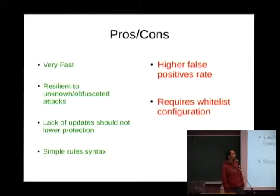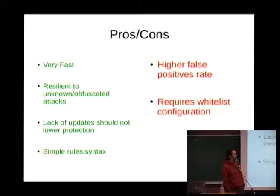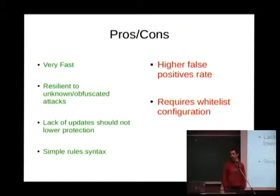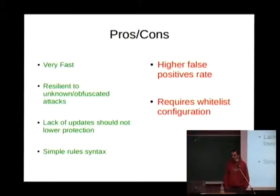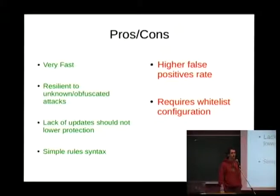Avoiding large sets of regular expressions and signatures makes the software run very fast. You can see some benchmarks on the Google Code page — it's quite fast compared to web application firewalls that rely on big sets of rules. And the last thing is that you don't have to perform any updates on the core rules because there are no definitive attack signatures.